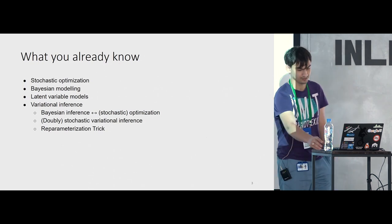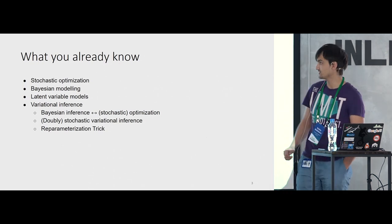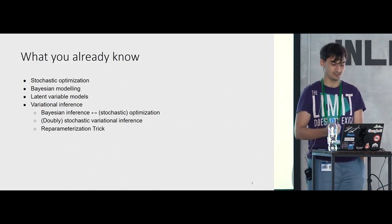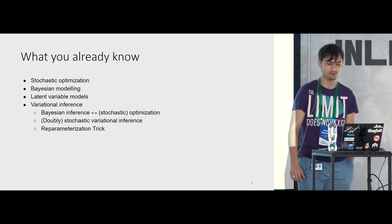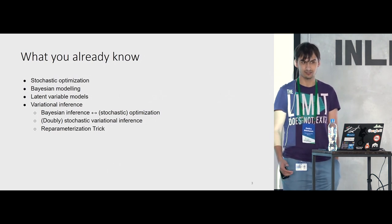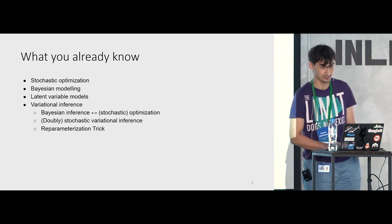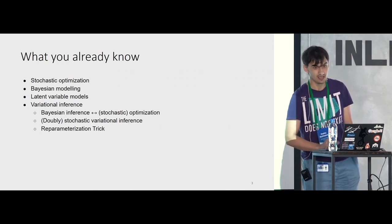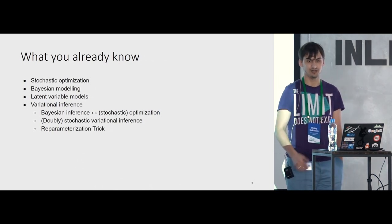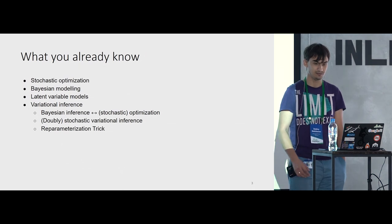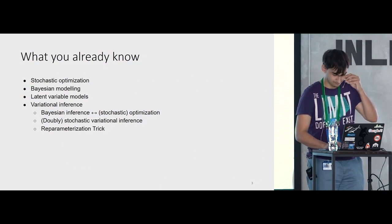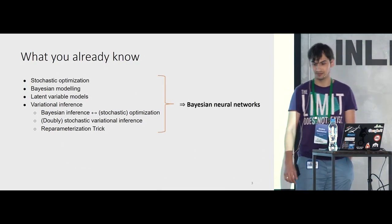What you already know and will need during this lecture: stochastic optimization, which is now commonplace in all machine learning models; the basics of Bayesian modeling and latent variable models like variational autoencoders; how to train these models using variational inference — a technique that casts the intractable Bayesian inference problem as a tractable stochastic optimization problem; and the reparameterization trick, which allows obtaining gradient estimators for variational inference objectives. Using these building blocks, we will build Bayesian neural networks.